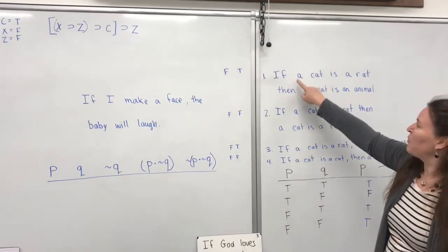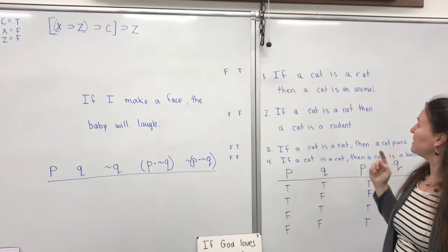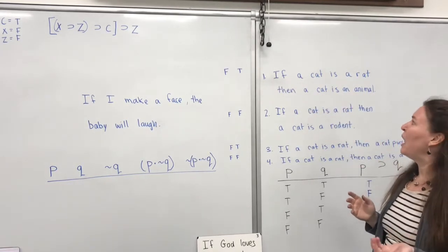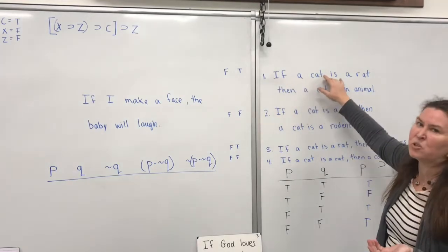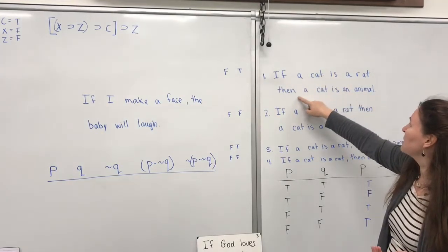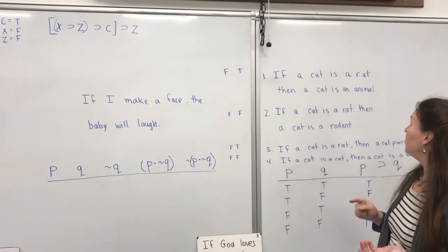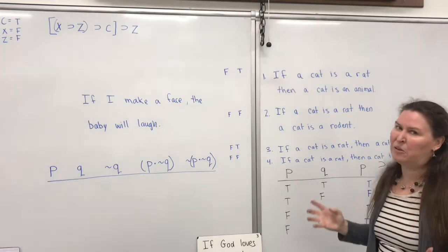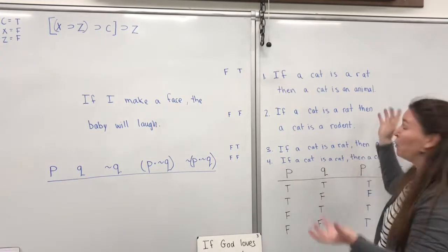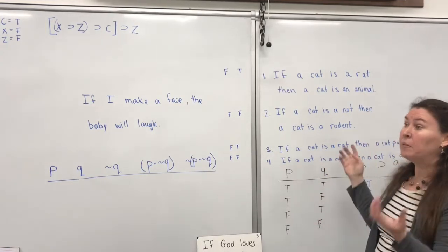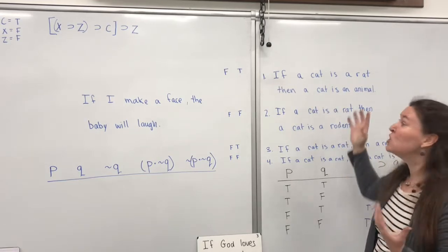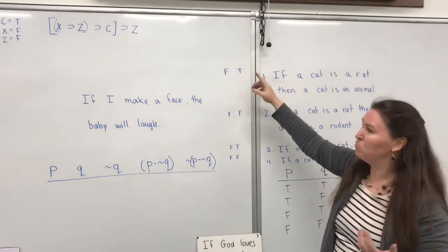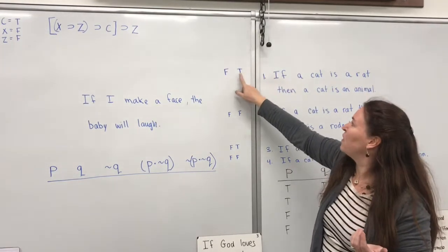So I've set up this one: if a cat is a rat, then a cat is an animal. This is really thinking about the hypothetical. A cat isn't a rat, so the antecedent would be false. But a cat is an animal. If you're thinking hypothetically, if a cat in an imaginary world were a rat, the cat would still be an animal. So you can sort of see how it's a true proposition from a false leading to a true.